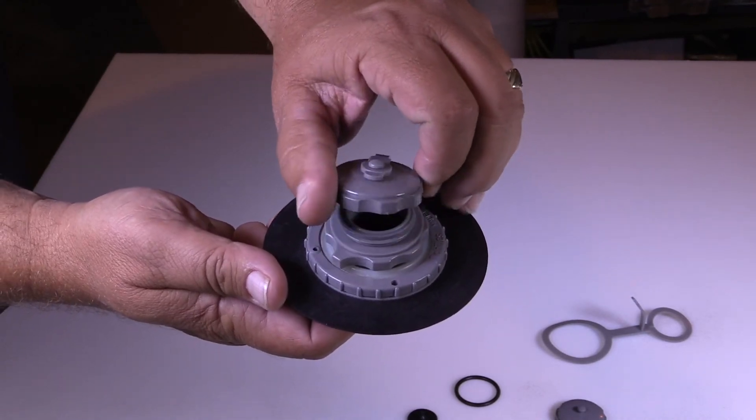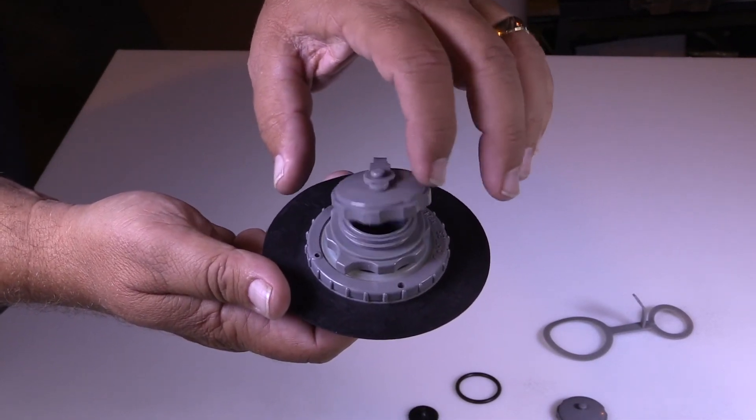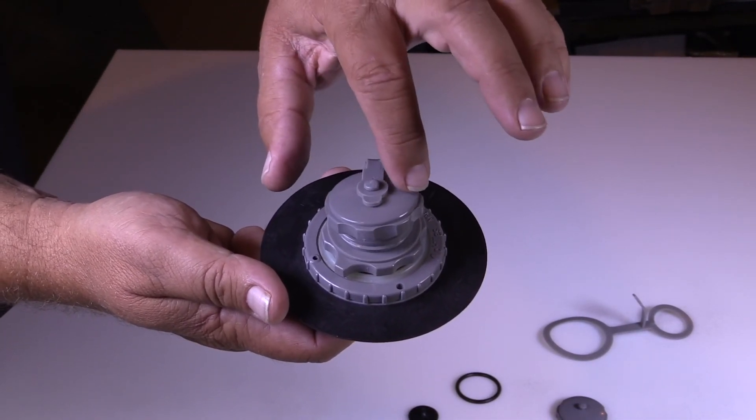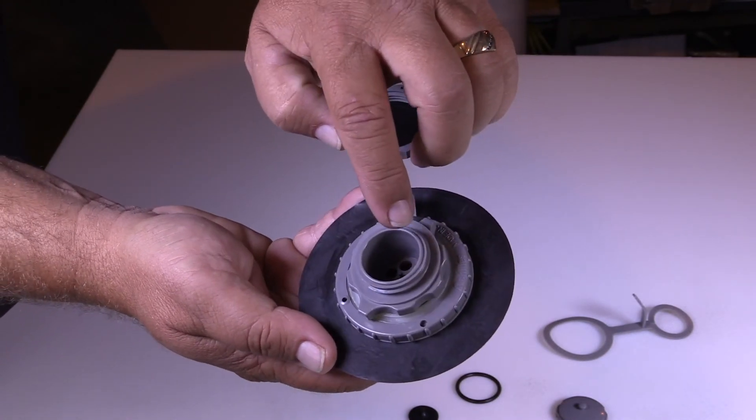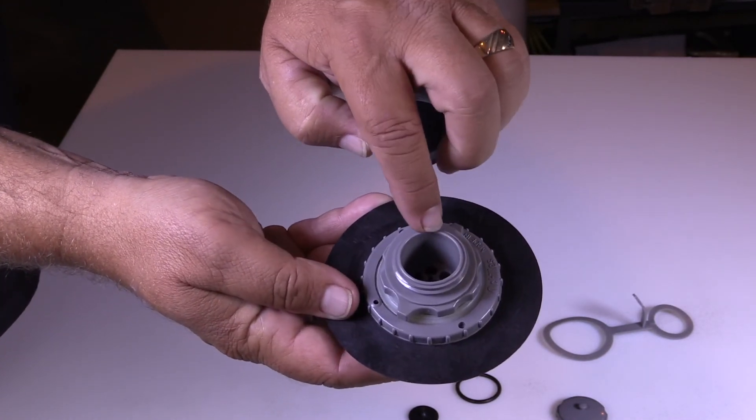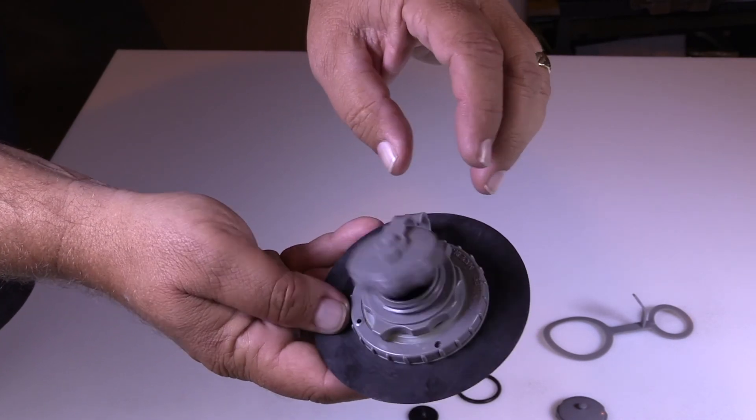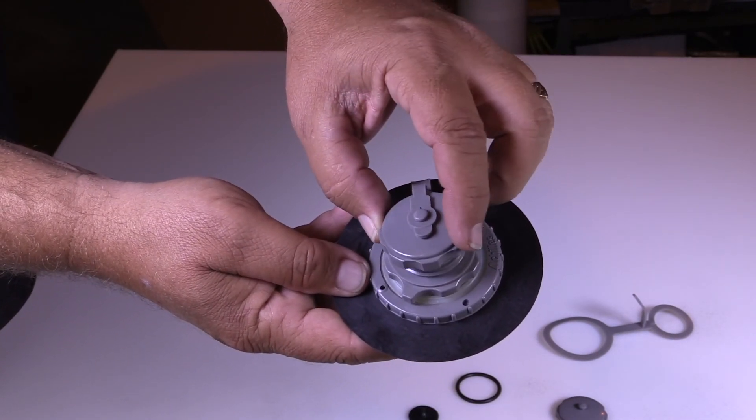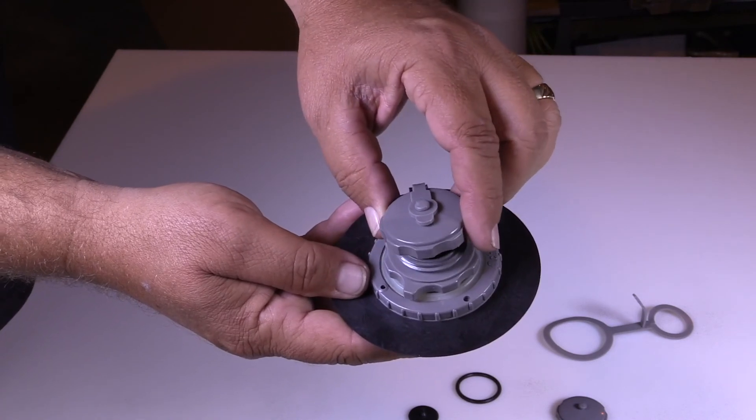The caps can get cracked or broke over time. If the cap is cracked or broke, the one-way flapper inside can weep air. So it's best to always replace the cap if it's cracked or broke.